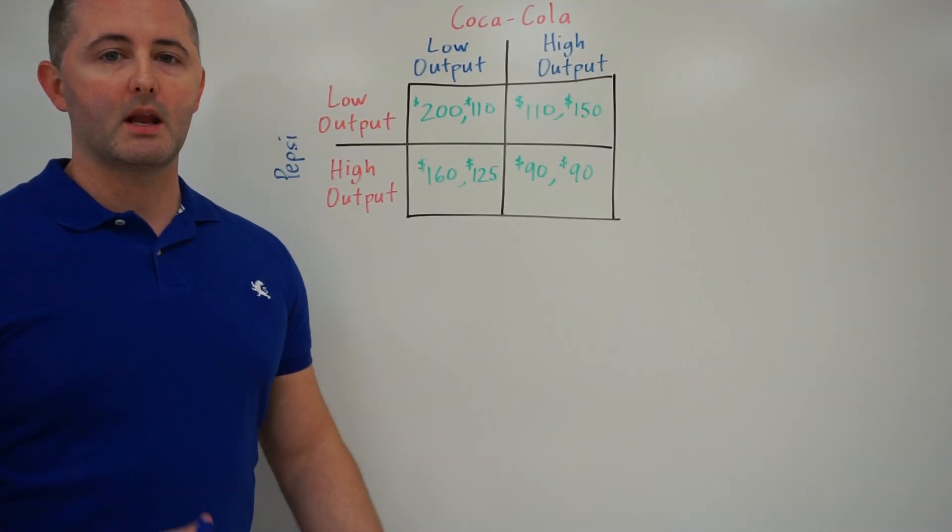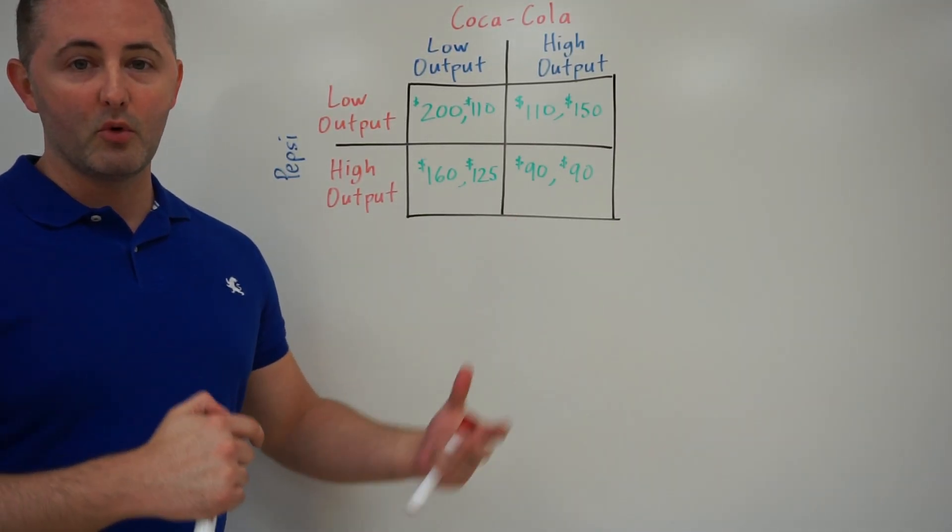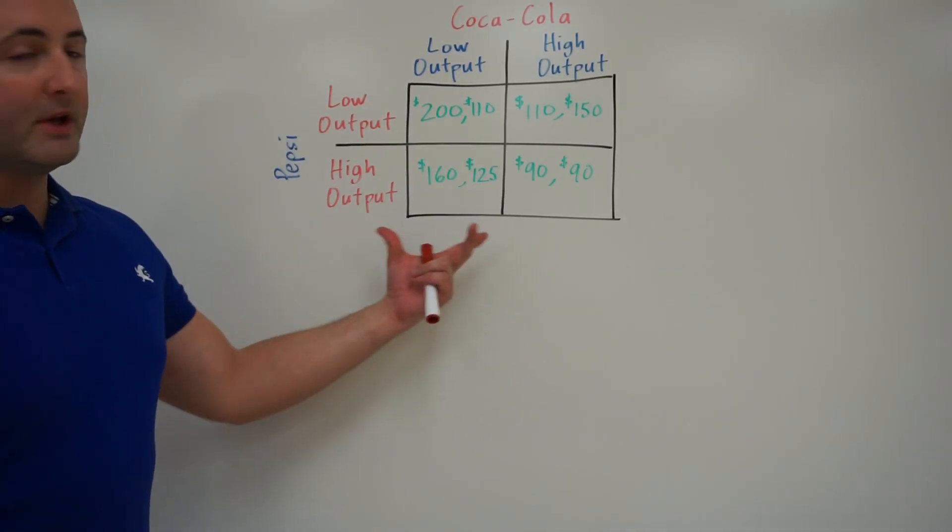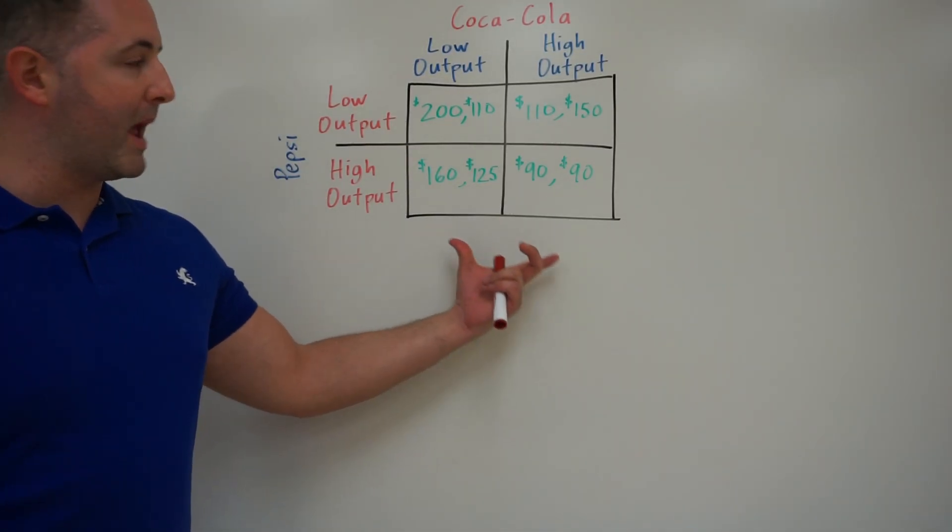We're not really going to solve this problem. We're just going to look at exactly what we see here, how to read this. First of all, this is called a payoff matrix.